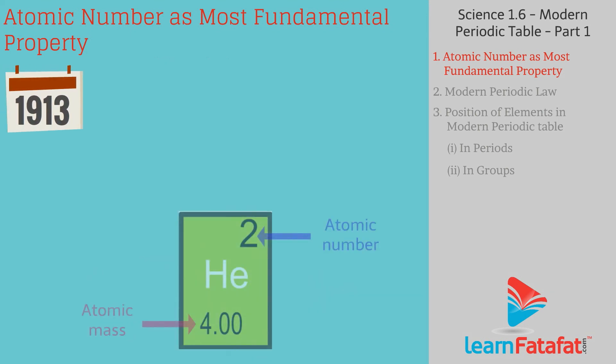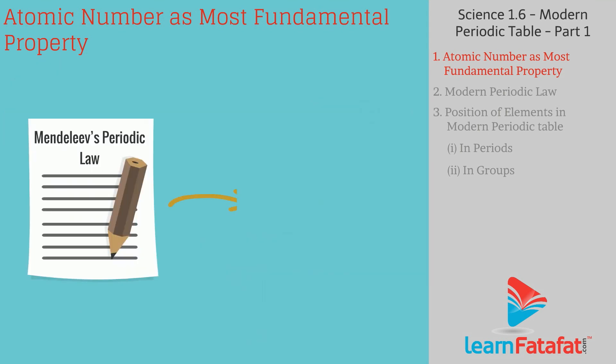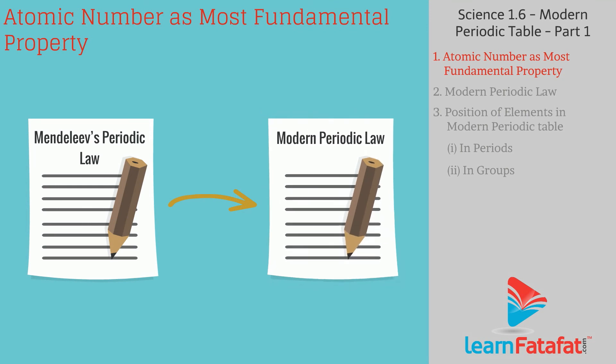Till 1913, atomic mass was thought as the most fundamental property, but Henry Moseley, an English physicist, discovered that atomic number is the most fundamental property of element. With this discovery, Mendeleev's Periodic Law was modified into Modern Periodic Law.